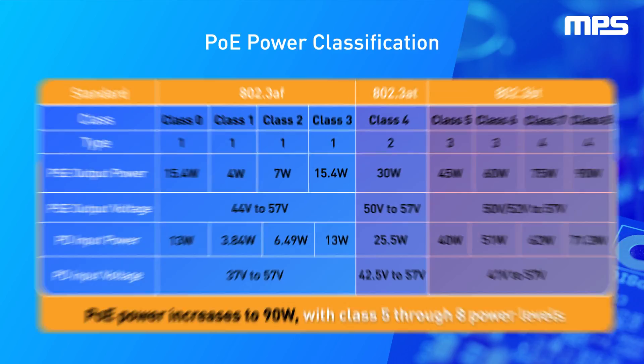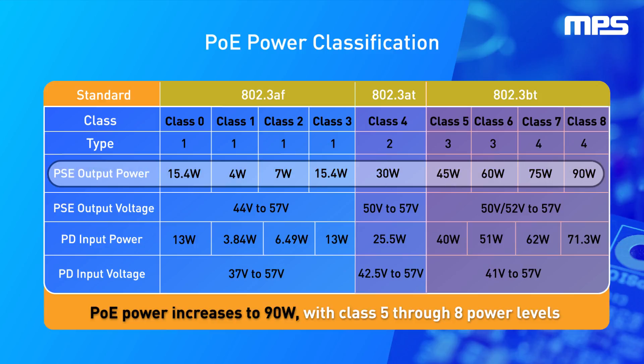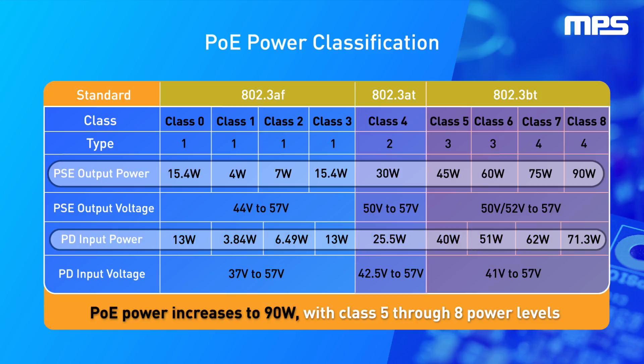With equipment requiring different power levels, the PoE standard has 802.3AF, 802.3AT, and 802.3BT, from class 0 to class 8. The PSE power output supports from 4 watts to 90 watts due to energy loss on the Ethernet wire during transmission. The PD input power supports 3.84 watts to 71.3 watts.